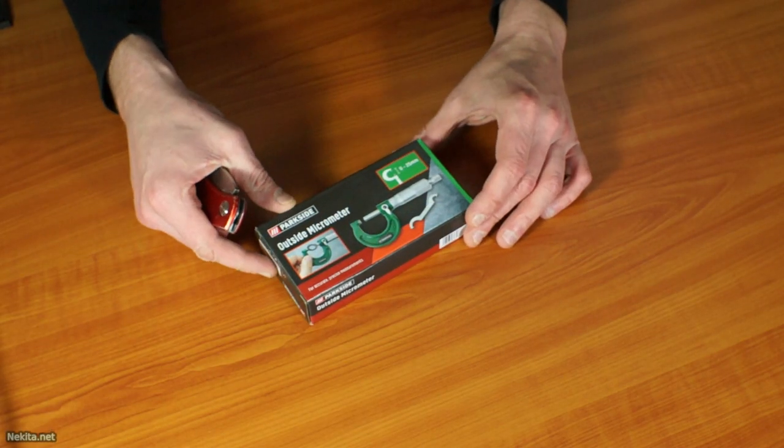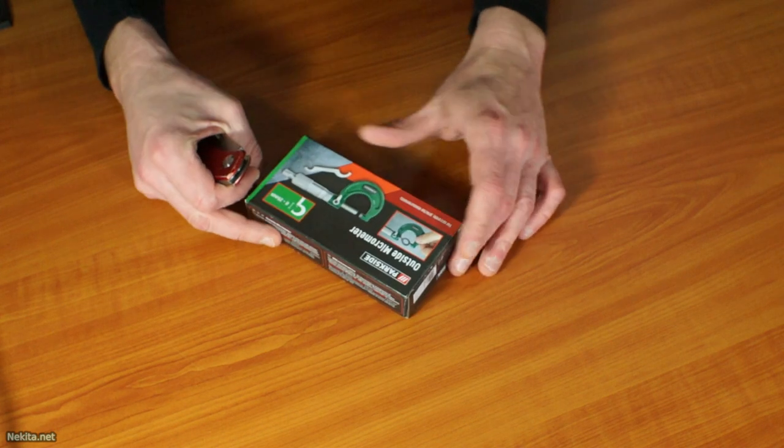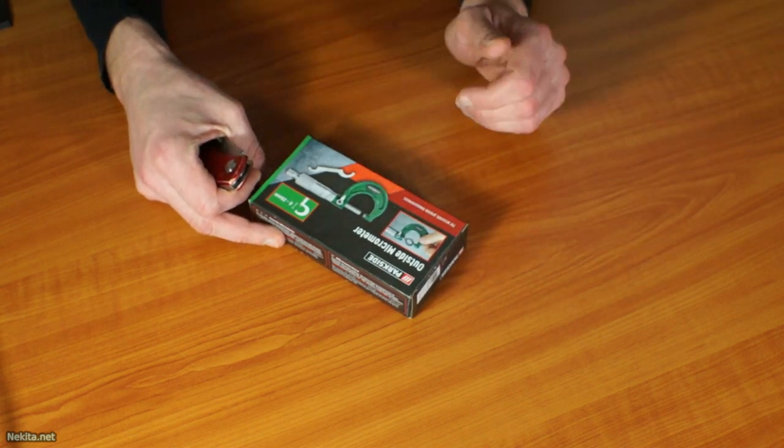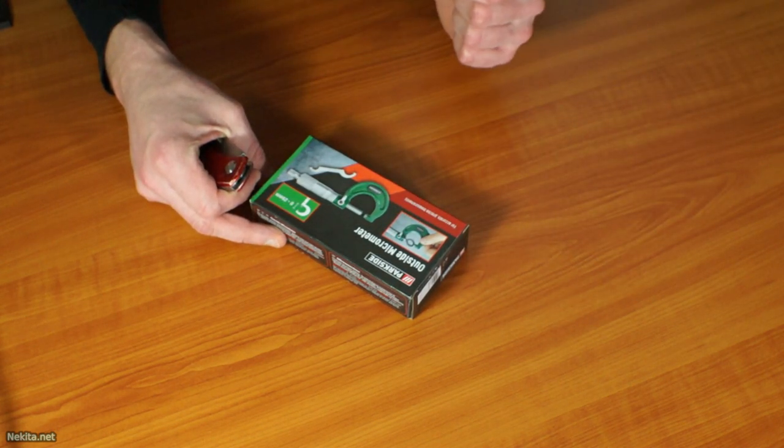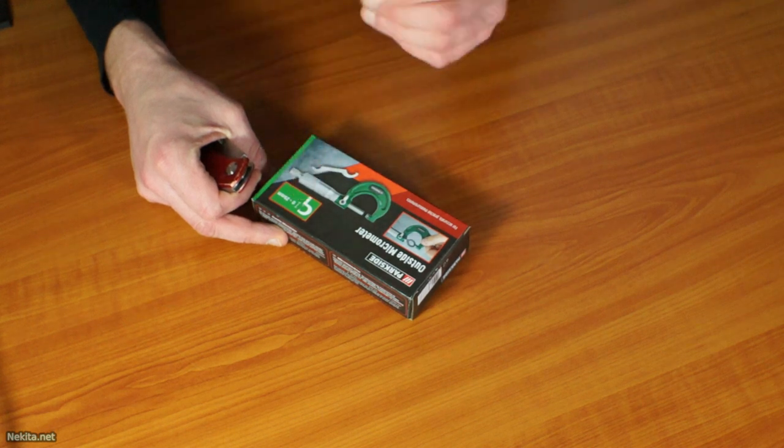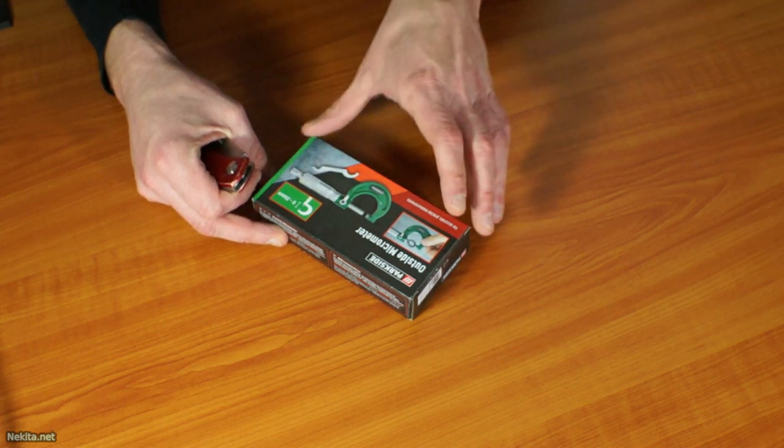Hi there, this is Nikita Netzer. On the bench today is a Parkside outside micrometer. Micrometer! And it's range from 0 to 25 millimeters.